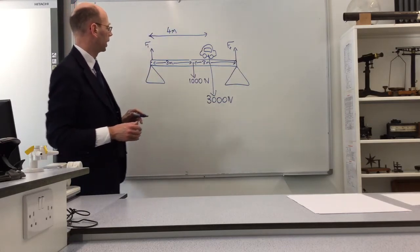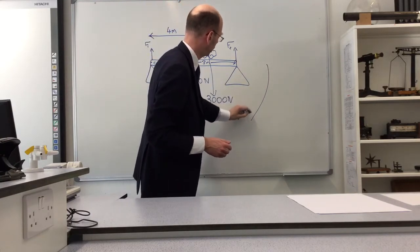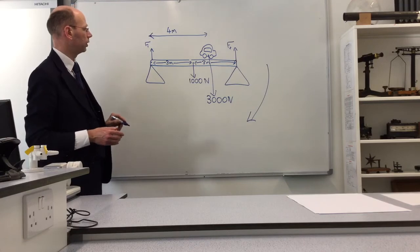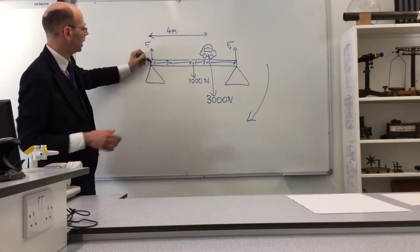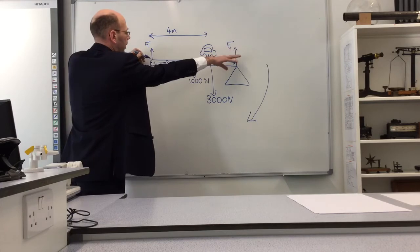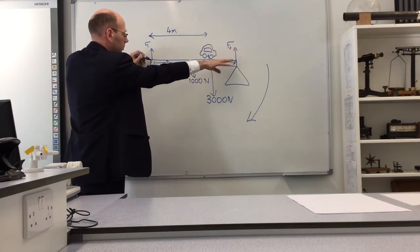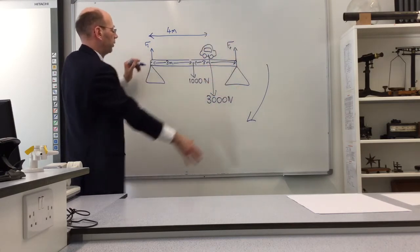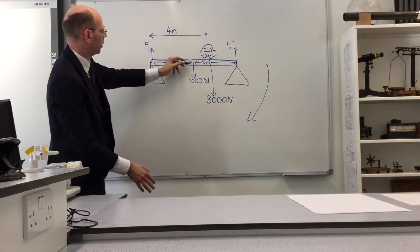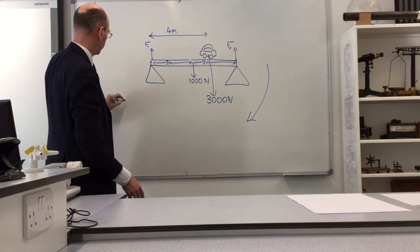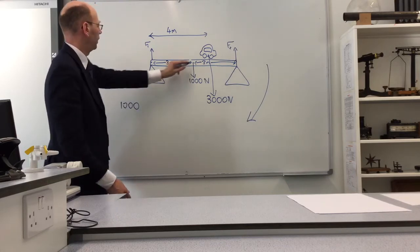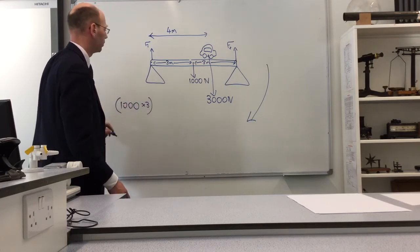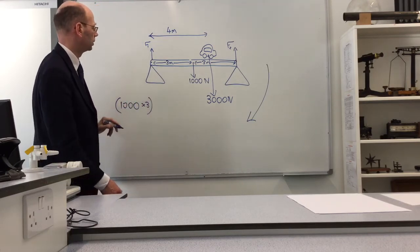Let's start off with the clockwise moments. What forces have we got that are trying to spin the bridge clockwise? Imagine it's pivoted here, let's just concentrate on the clockwise ones. We've got the weight of the bridge, which is 1000, and it's at a distance of 3. So we've got 1000 times 3 as a contribution to the clockwise moment.